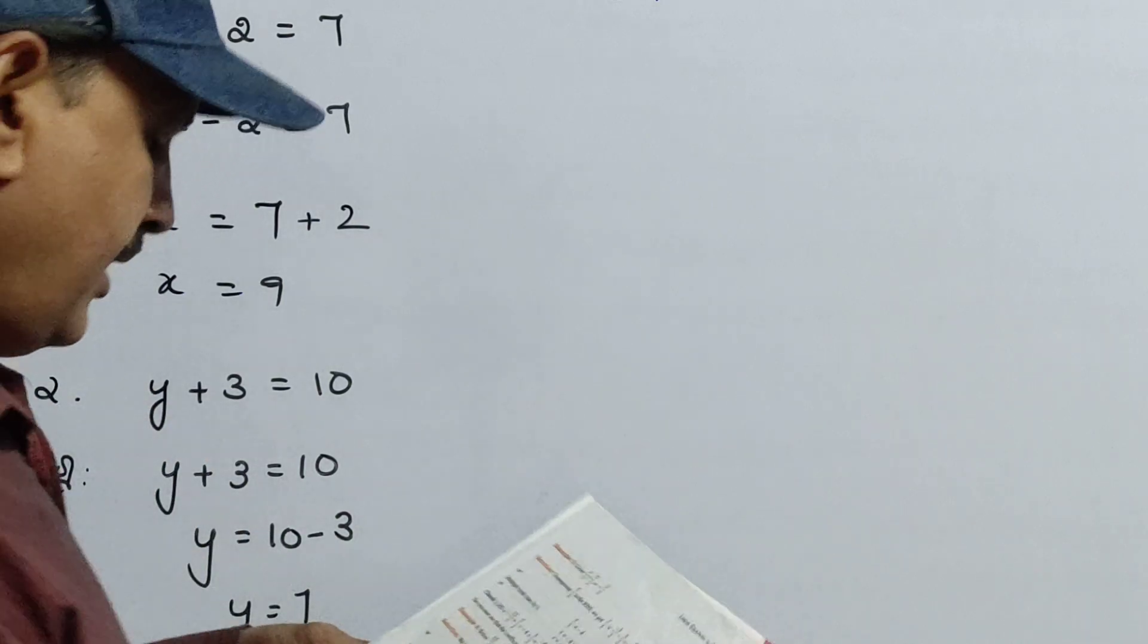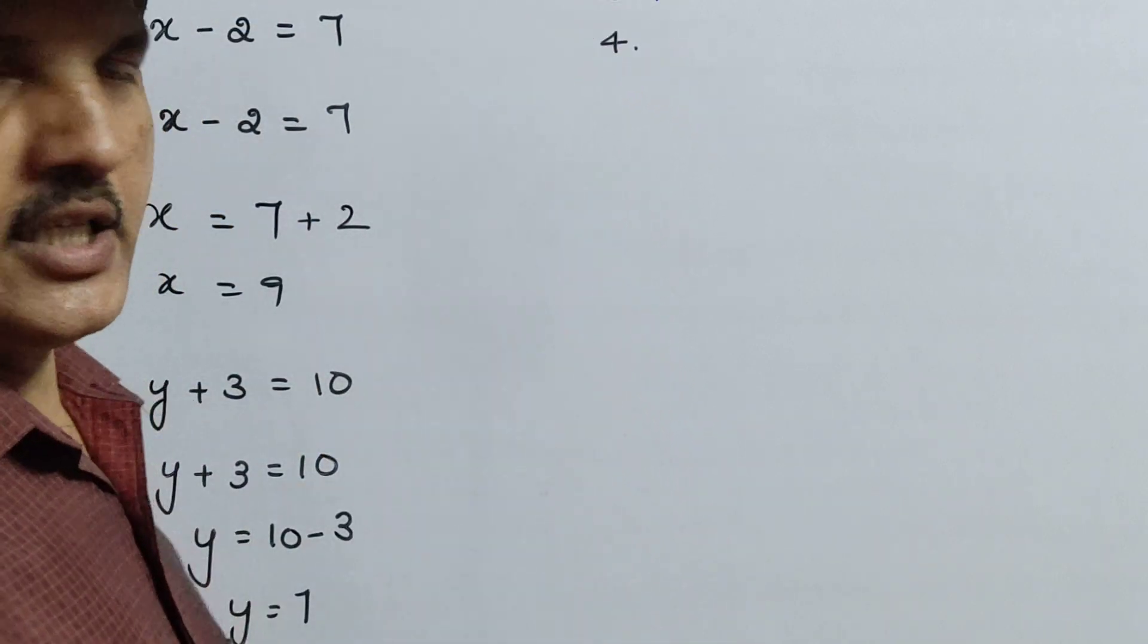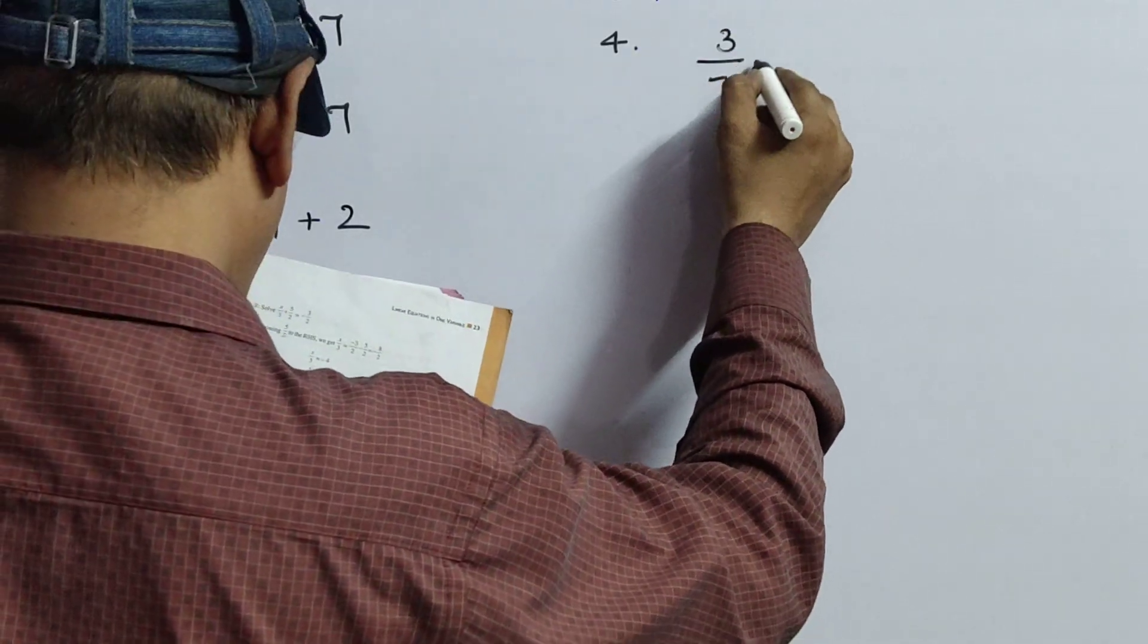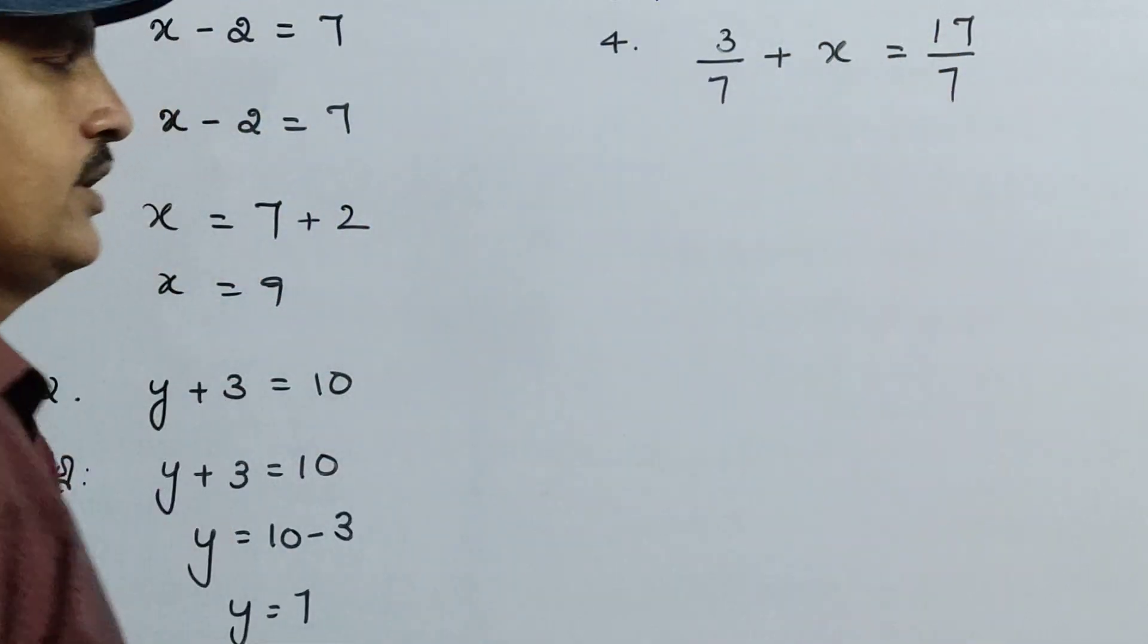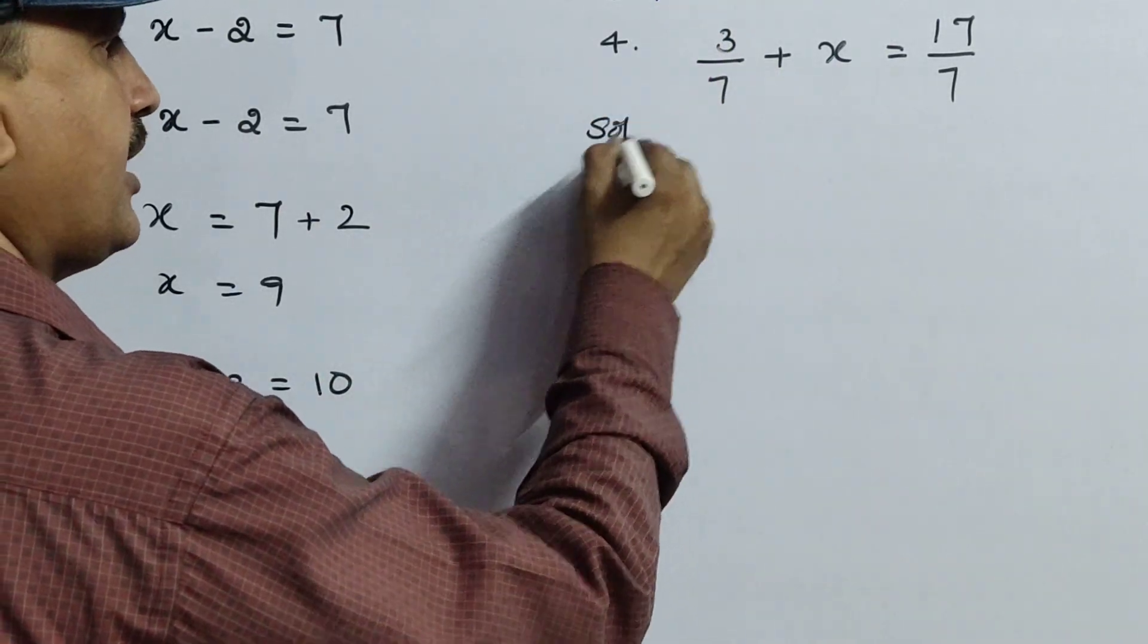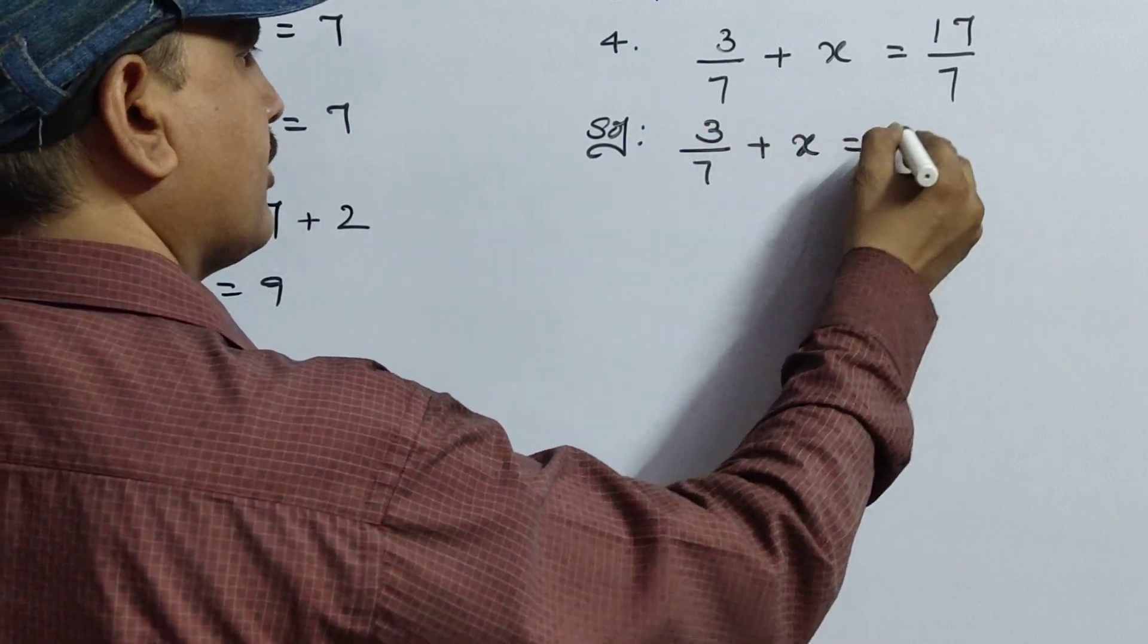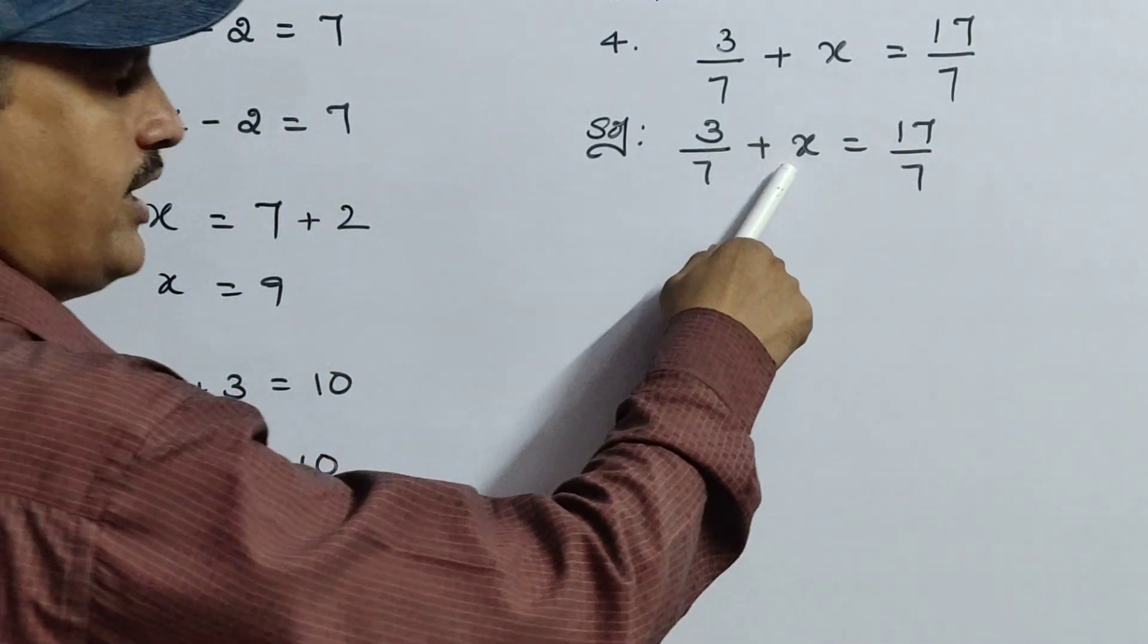Next, coming to the next sum, that is fourth sum. Because what are the leftovers, you can take it as a homework. So 3 by 7 plus x equals to 17 by 7. Our target is what? We have to find the value of x. So write the solution very clearly. Write the question: 3 by 7 plus x equals to 17 by 7.